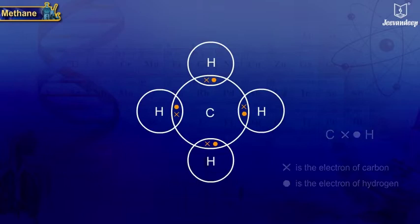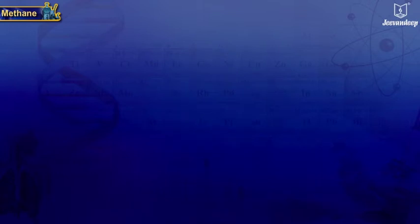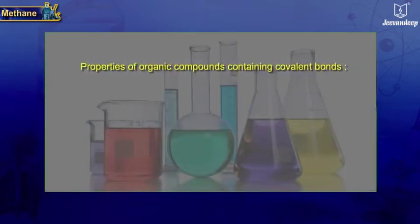This type of representation is known as electron dot and cross structure. Some properties of organic compounds containing covalent bonds are: melting and boiling points of covalent compounds are low.